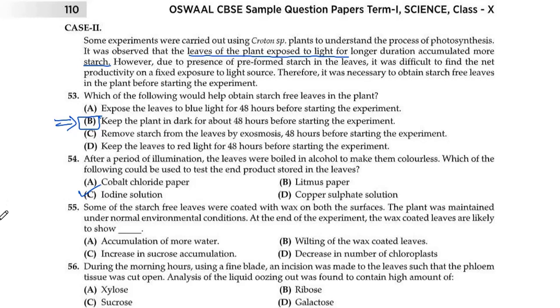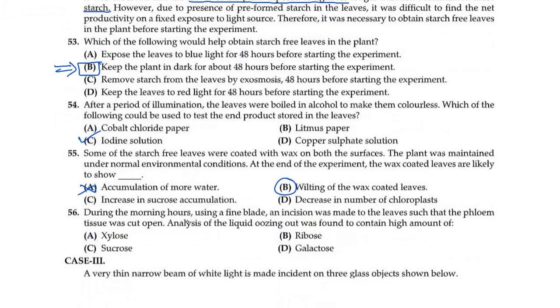Question 55: Some of the starch-free leaves were coated with wax on both surfaces. The plant was maintained under normal environmental conditions. At the end of the experiment, the wax-coated leaves are likely to show what? They have starch-free leaves with wax applied on top, and they're asking what effect will there be on wax-coated leaves. First option is accumulation of more water, this can't be the case. B is wilting of the wax-coated leaves. Yes, wilting will start to happen because they are not getting proper environmental conditions. And what is wilting? It happens because of transpiration. Transpiration will be blocked, so wilting is possible. Wilting means withering or drooping.